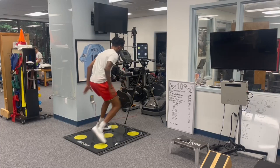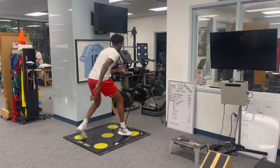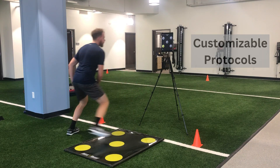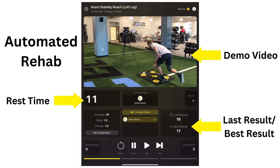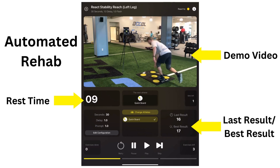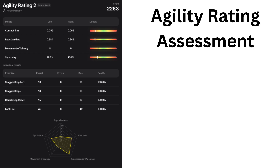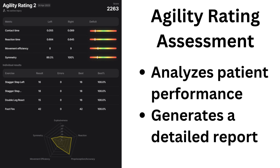The QuickBoard's rehab protocols can be tailored to a patient's exact needs, making it suitable for all populations. Each protocol has an automated option for patients to complete protocols independently. QuickBoard's software also includes an agility rating assessment, which analyzes a patient's performance and generates a detailed one-page report of their agility and symmetry.